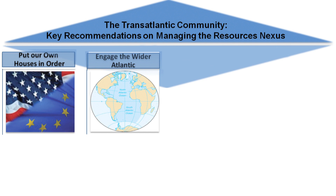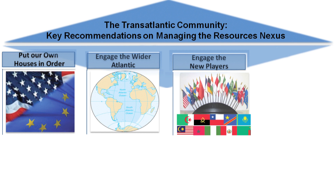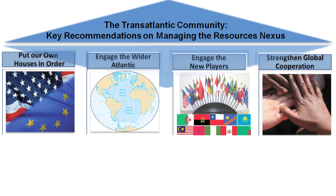The third pillar is to engage other new players, looking particularly to Asia, China, India, the Middle East, rising African countries and Russia, to engage them in addressing with us some of the global nexus challenges that we've identified. The final pillar is to support international institutions in two ways: one is to reinforce existing institutions that may not be getting the support they should, and the second is to think about creating new institutions, particularly on data gathering, data management and policy learning.